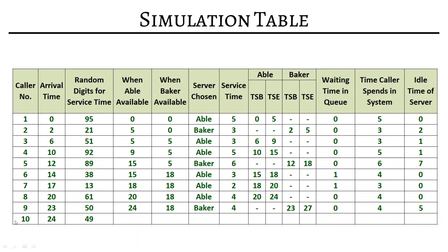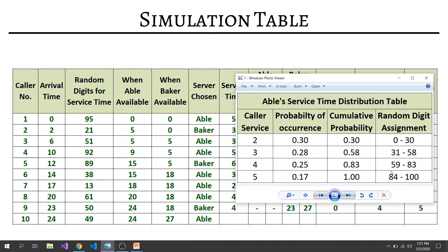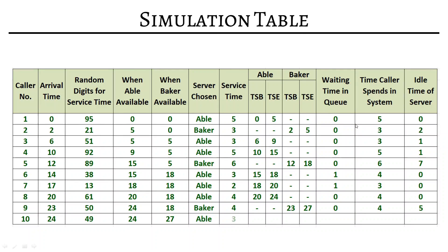The tenth caller arrives at time 24. Abel is available at 24 and Baker is available at 27. We prefer Abel. Random digit 49 gives service time 3. Service begins immediately at 24 and ends at 27. Baker is busy serving someone else. Waiting time is 0; time in system is 3. Abel idle time is 0 — it was working continuously. This completes the simulation table for this multi-channel single-queue problem with two service providers.